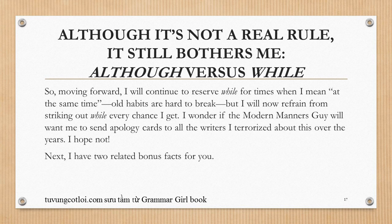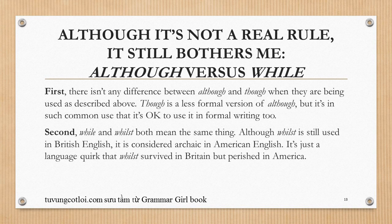Two bonus facts: first, there's no difference between 'although' and 'though' when used as described — 'though' is a less formal version of 'although,' but it's in such common use that it's fine in formal writing too. Second, 'while' and 'whilst' both mean the same thing. Although 'whilst' is still used in British English, it's considered archaic in American English — it's just a language quirk that 'whilst' survived in Britain but perished in America.